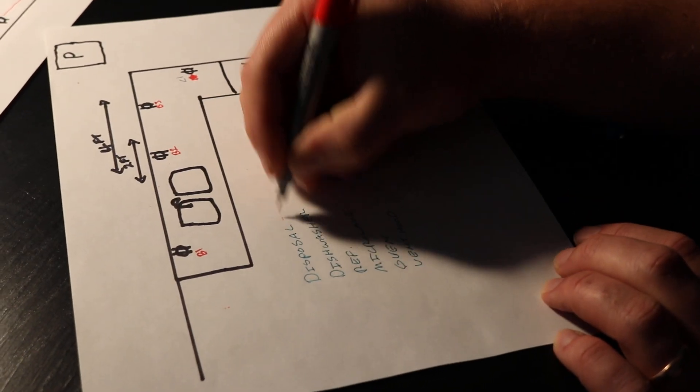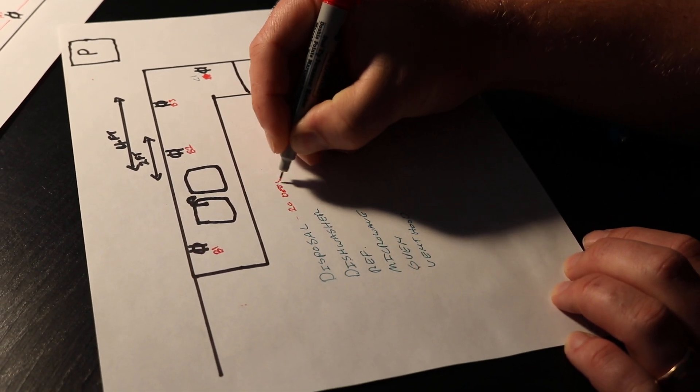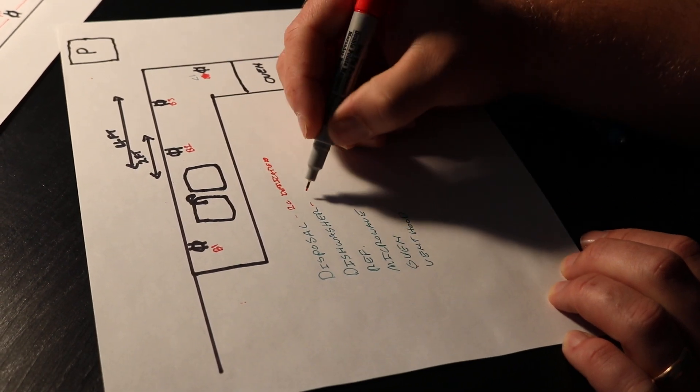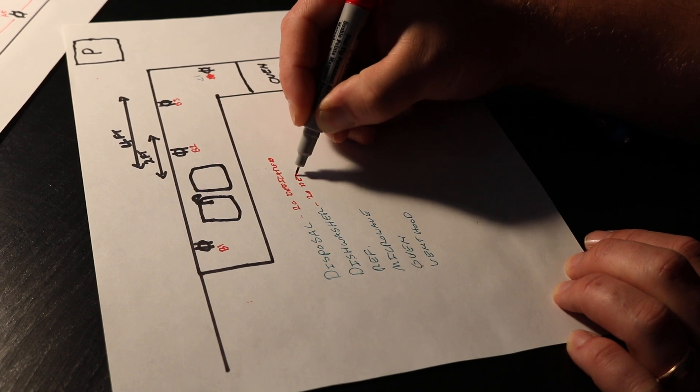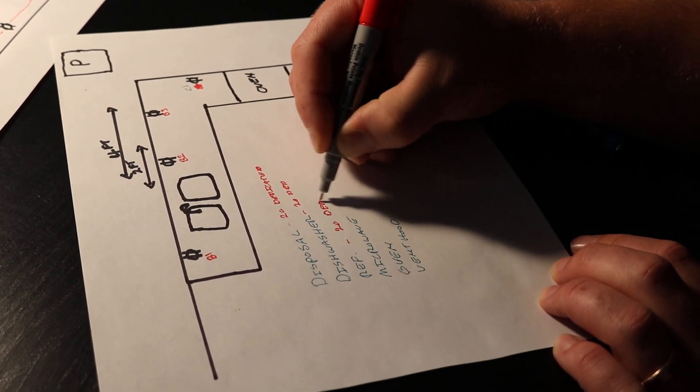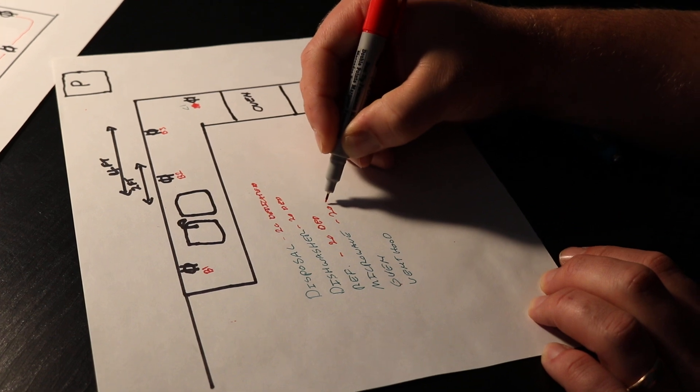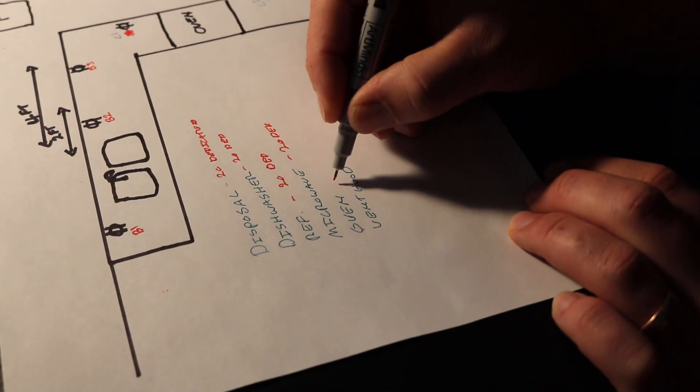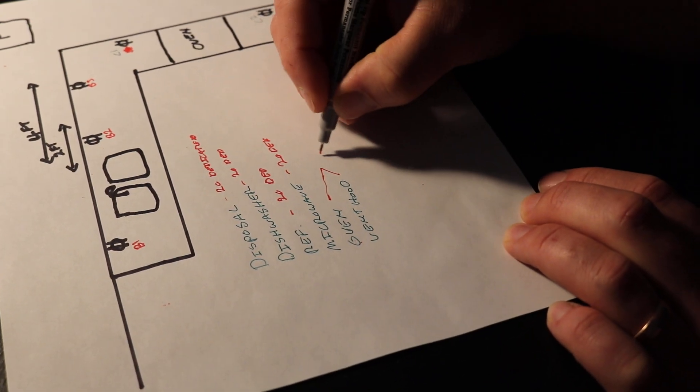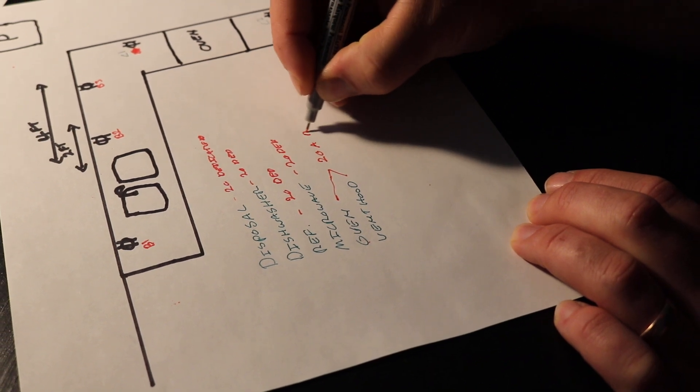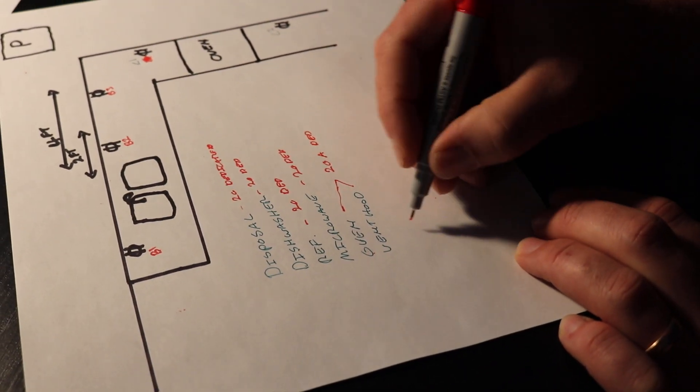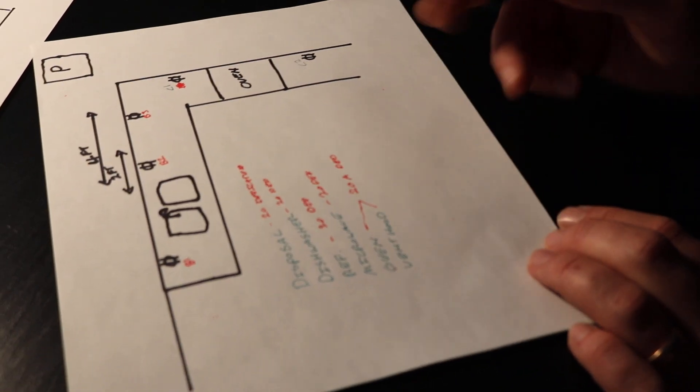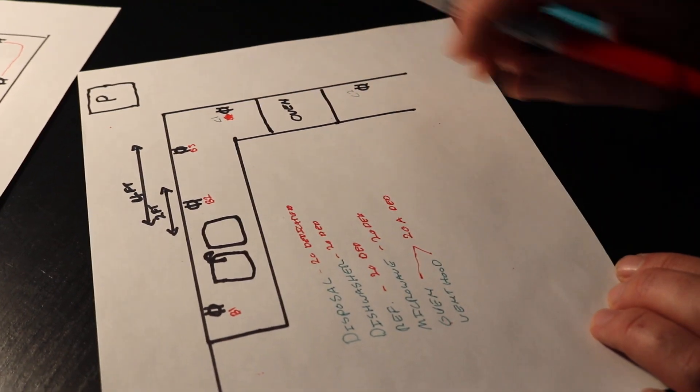So your disposal would be 20 amp dedicated. Same thing here. They're all going to be 20 amp dedicated. Now your oven, if you have, if you're using a gas oven, you can put your vent hood and your oven on the same 20 amp dedicated. If it's an electric oven, it's probably going to be a 50 amp 240 volt. So you want to pay attention to that. What is the requirement for your oven?